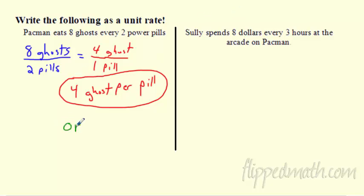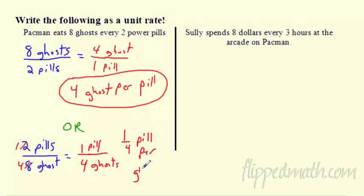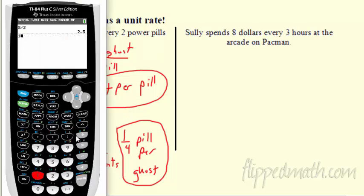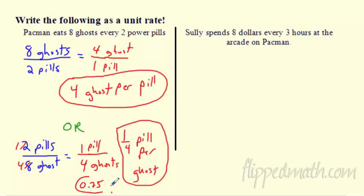Is that the only answer? No. You actually could have done this another way. So I'm going to put a big or there. What if you did it the other way? You could say, well, he eats 2 pills every time he eats 8 ghosts. So 2 pills for every 8 ghosts. If I reduce this, the 2 goes into here once, 2 goes in there 4 times. I actually get 1 over 4. Totally cool. It's just 1 pill for every 4 ghosts. So again, it is a unit rate. It's just a 1 4th pill per ghost. So it's totally legit. You can say that. That is a unit rate. I'll accept either one of these. You could even make it a decimal. It's 0.25. So if you want, you can make it the decimal and say it's 0.25 pills per ghost.